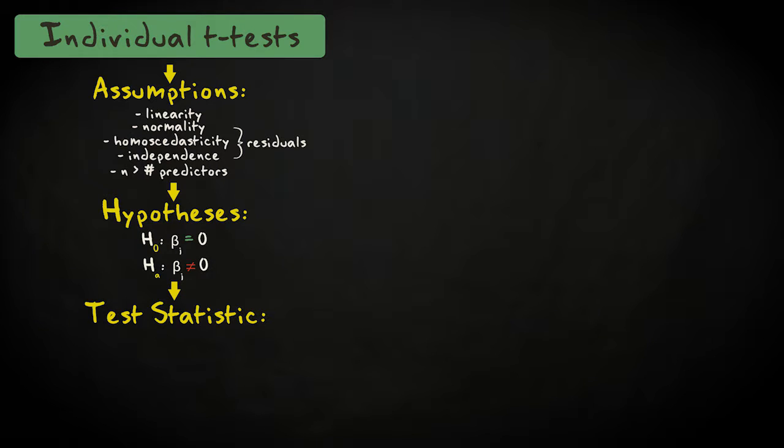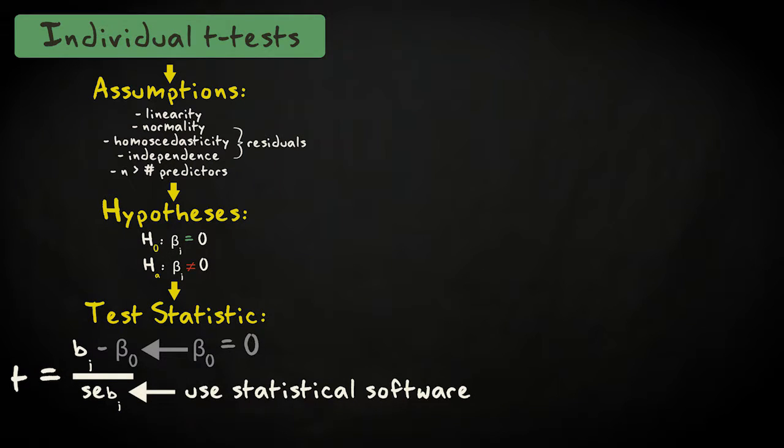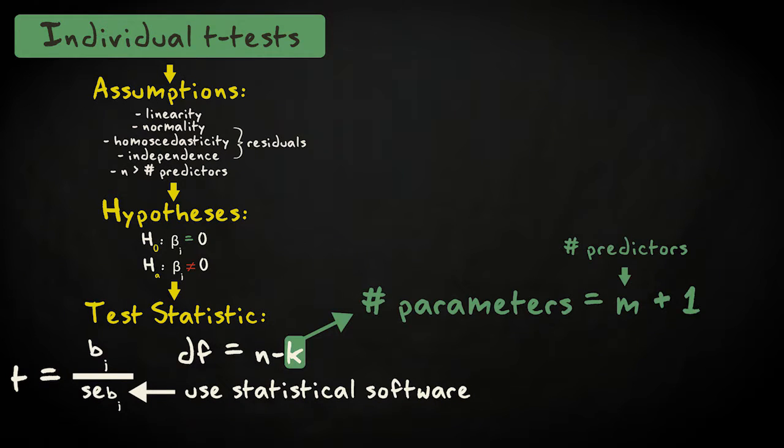The test statistic t equals the regression coefficient divided by its standard error. We'll leave the computation of the standard error to statistical software, since it's difficult to compute when we control for the other predictors. The degrees of freedom equal n, the number of observations, minus the number of parameters in our model, which equals the number of predictors plus one for the intercept.